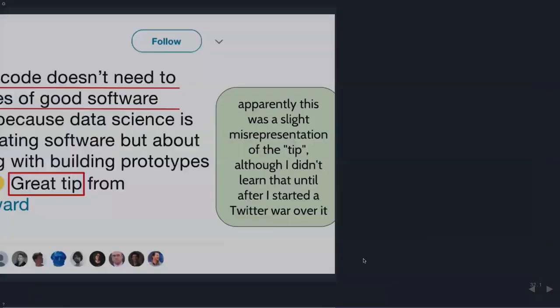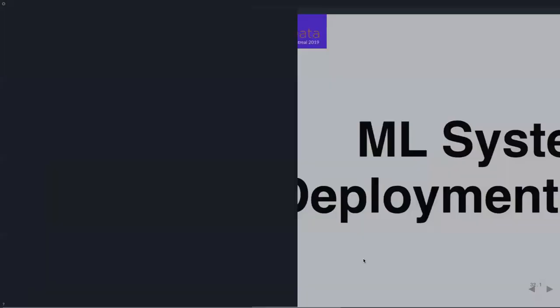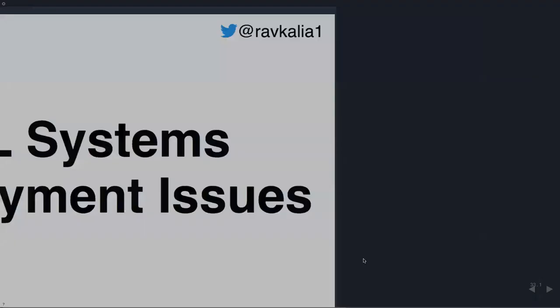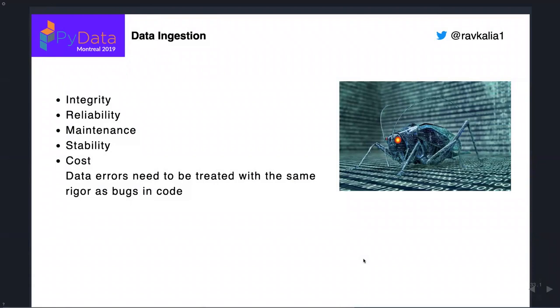Issues with deployment of ML systems: on the data side, there are a number of issues — data coming in can change, it's not reliable, things crash, fall apart, and costs can go beyond budget. But at the end of the day, data errors need to be treated just as thoroughly as code errors. If it's not acceptable to have bugs in code, it's not acceptable to have bugs in data, and we need tools to manage that.